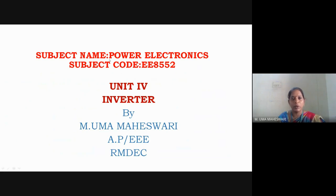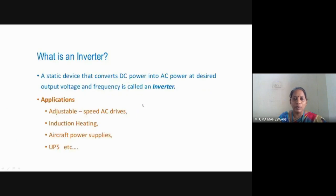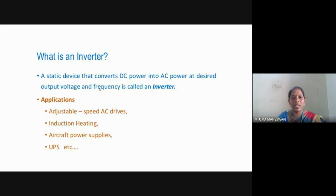This session we are going to discuss the subject Power Electronics, subject code E8552, unit 4: Inverter. An inverter converts DC power into AC power. The output voltage and frequency are variable. Such conversion is known as inverter operation — an inverter which converts fixed DC to variable AC, where both output voltage and frequency can be controlled.